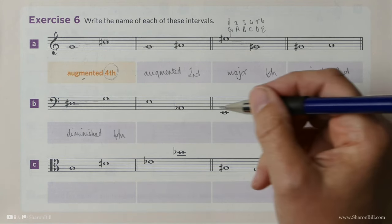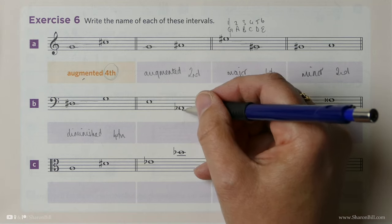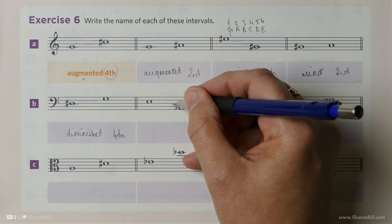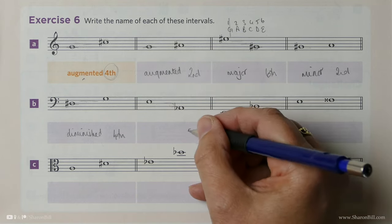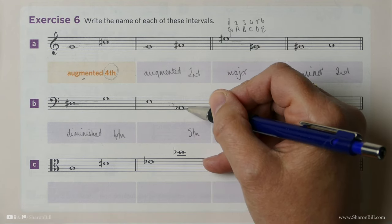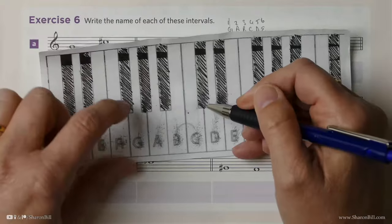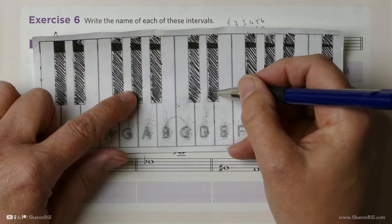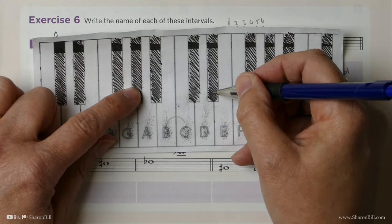Now regardless of the order, we count from the lowest note up. This is a 1, 2, 3, 4, 5. It's a 5th. This is A flat. Don't forget I'm in the bass clef. So we know that A flat to E flat is a perfect 5th.